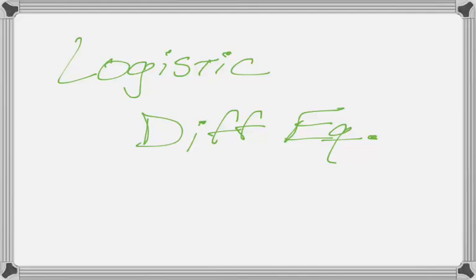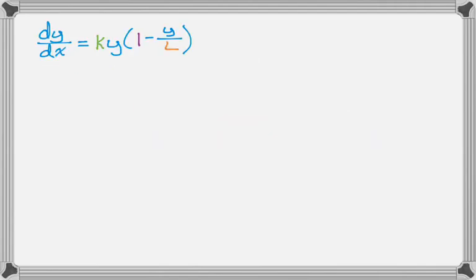All right, in this video we're going to talk about the logistic differential equation, so pretty much everything you need to know for calculus BC related to this. So it's going to look like this: dy/dx equals k times y times the quantity 1 minus y over L, and then for what we're going to do, we need an initial condition. So I'm going to say y(0) equals y sub 0.